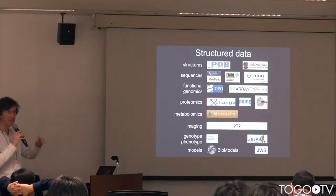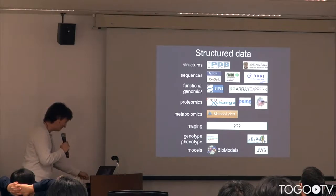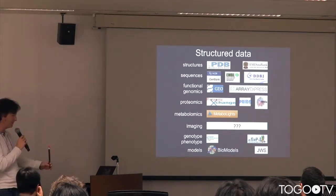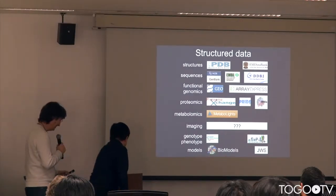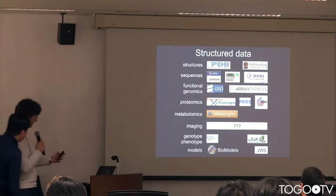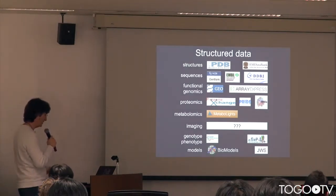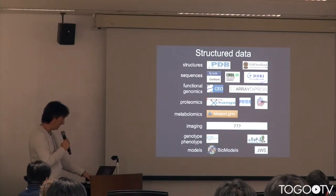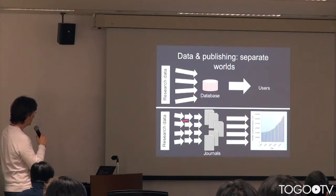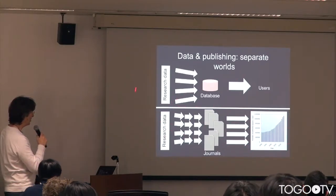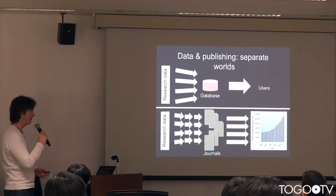There is roughly one public repository per major data type, though there are still big holes — imaging still doesn't have a repository. These resources were created to store and share data that could not be displayed properly. But this created a paradoxical situation where the journals — the scientific literature — live in essentially a parallel world from the databases, talking to each other only by providing a citation at the entire paper level.